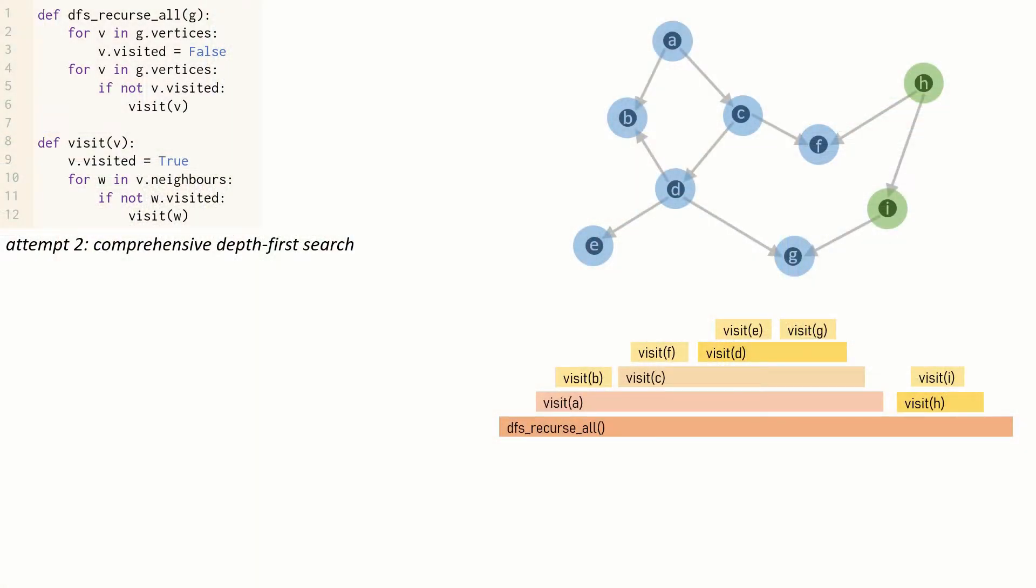The problem we're trying to solve is this: we want to get a total order on the vertices, and this depth-first search probably has something useful to tell us. Pause the video, have a think, and see if you can spot the total order hiding in this diagram.